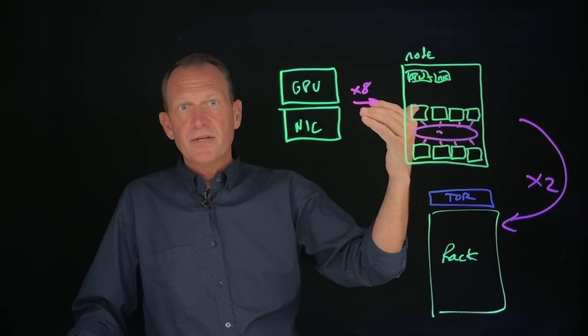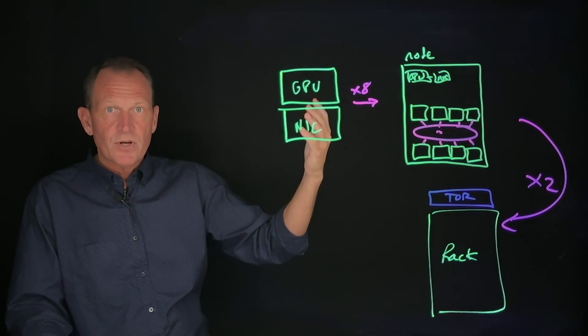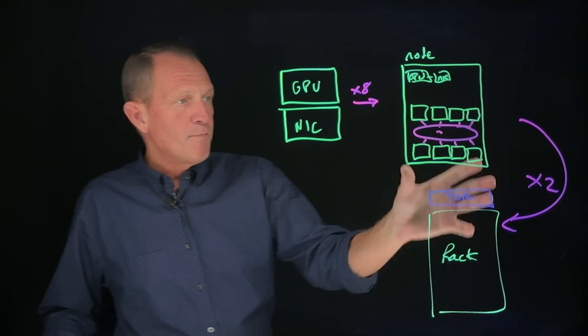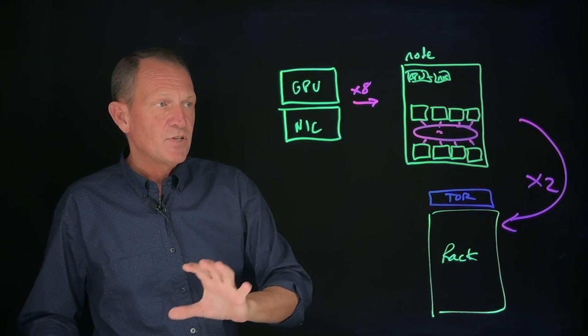From the Tor, we can make decisions on the type of network we want to have and oversubscription. We have a whole session talking about how to design those, but we have our base unit here of how we start to expand.